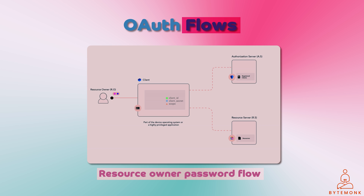Resource owner password flow is used when the application needs to access the user's protected resources, but the user does not want to be redirected to the IDP. Instead, the application asks the user to enter their username and password directly into the application. The application then sends the credentials to the authorization server, which validates them and returns an access token and a refresh token. The application can then use the access token to make requests to the resource server.